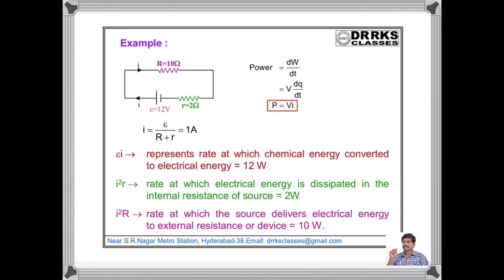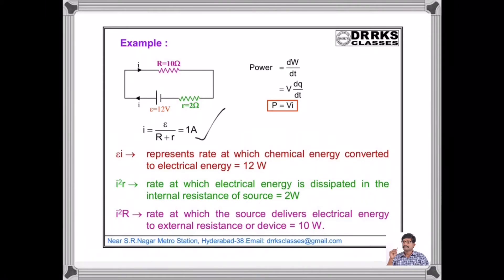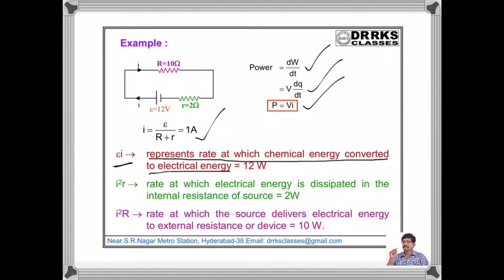Consider a simple circuit where a cell of EMF 12 volts and internal resistance 2 ohms is connected to an external resistance R = 10 ohms. The current through the circuit I = E / (R + r) = 1 ampere. Power is the rate of doing work, dW/dQ, and since dW = VdQ, power = V × I = voltage times current. The product EI = 12 watts represents the rate at which chemical energy is converted into electrical energy in the cell.